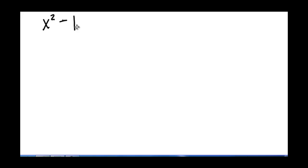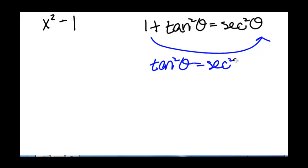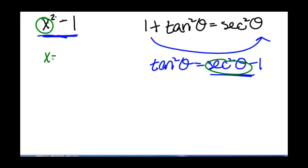So far, we have seen two ways to use trigonometric substitution. There is a third way, and that's when we have something of the form x squared minus 1. With this form, we use the trig identity that 1 plus tangent squared of theta equals secant squared of theta. We move the 1 over to the left-hand side so that we have tangent squared of theta equals secant squared of theta minus 1. So we're going to let x be secant of theta, and that will be our substitution.